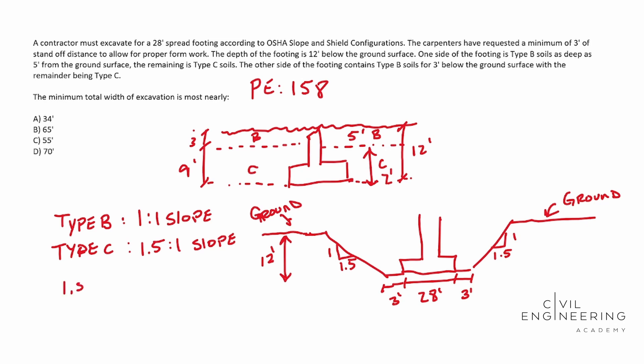We're going to go 1.5 over one. So we have run over rise in this case, right? Let's multiply it by our rise, which is 12 feet. And that's going to give you a run of 18 feet.